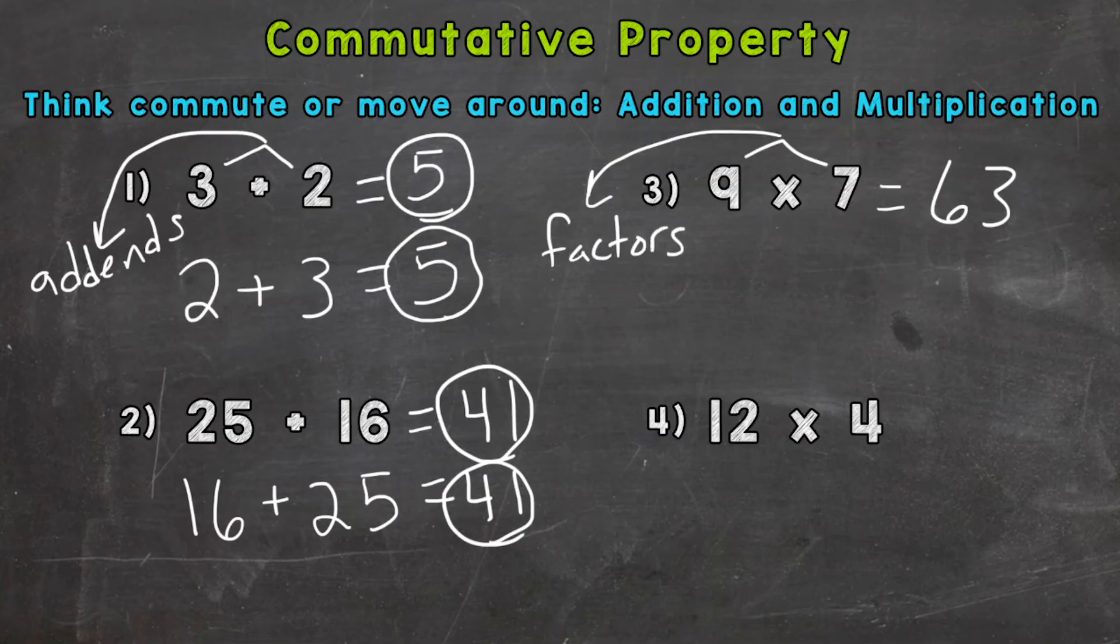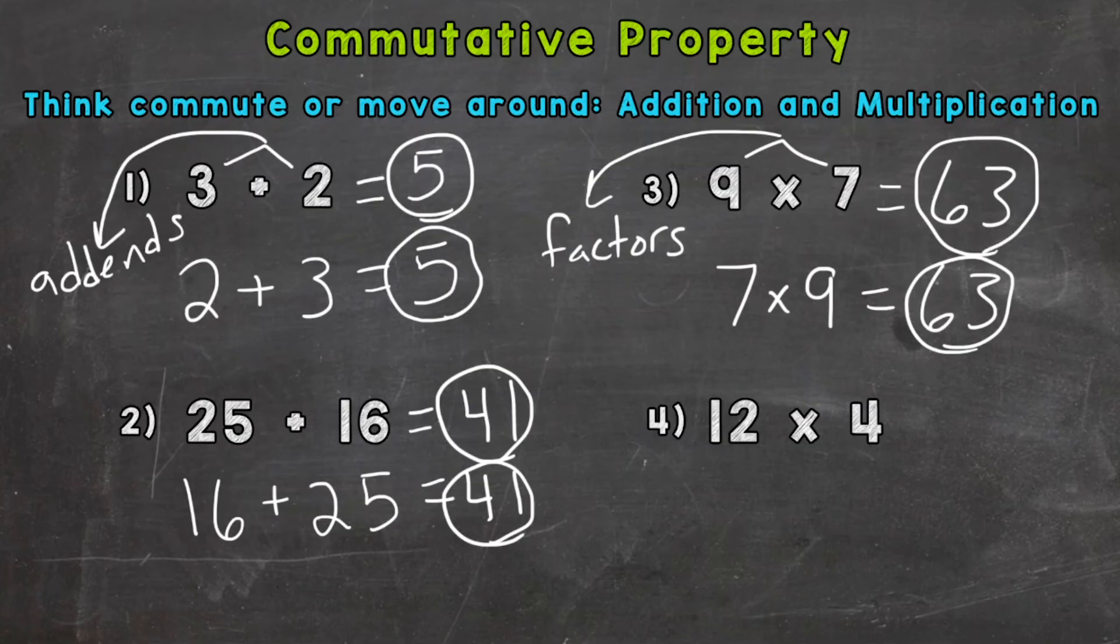Let's switch the factors and see if we get the same answer: 7 × 9 is still 63. So multiplication is commutative as well as addition.